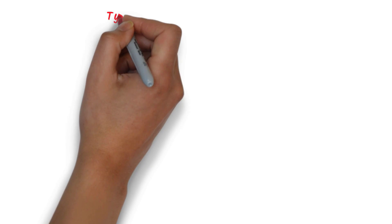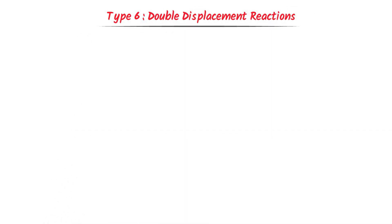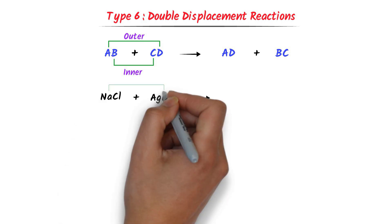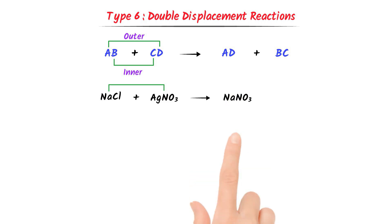Finally, the sixth type is double displacement reactions. In a general reaction, the inner reacts with the inner and the outer reacts with the outer — A reacts with D to give AD, while B reacts with C to give BC. For example, consider sodium chloride plus silver nitrate in aqueous solution. Sodium reacts with nitrate to give sodium nitrate, while silver reacts with chlorine to form silver chloride as a precipitate.